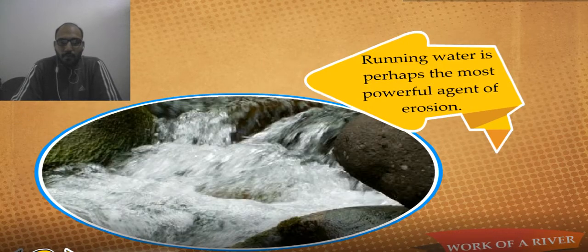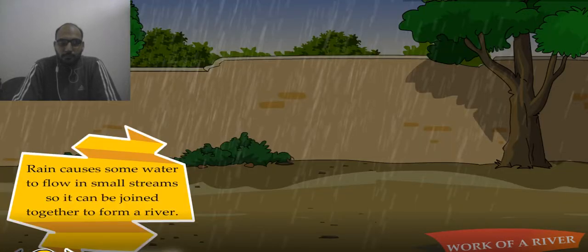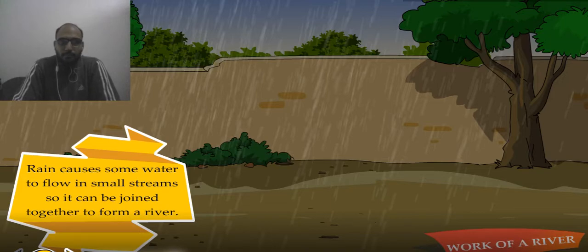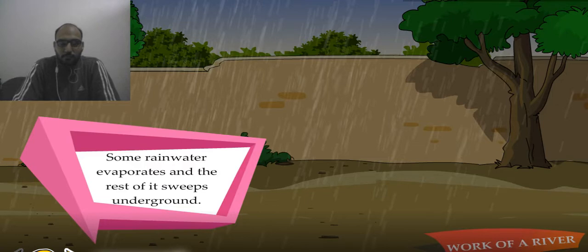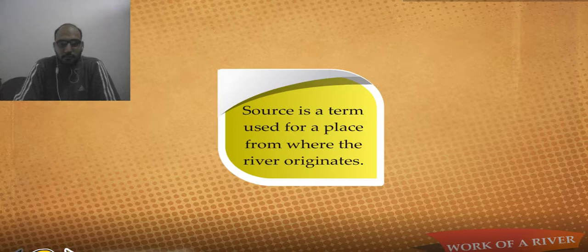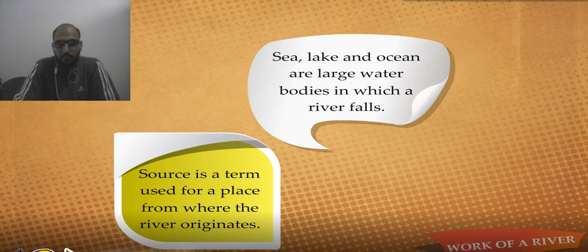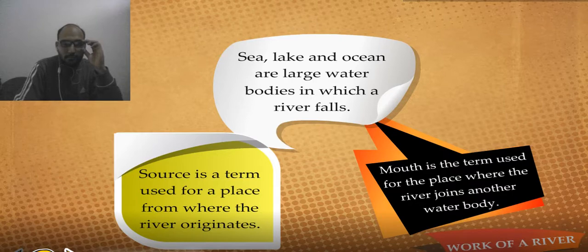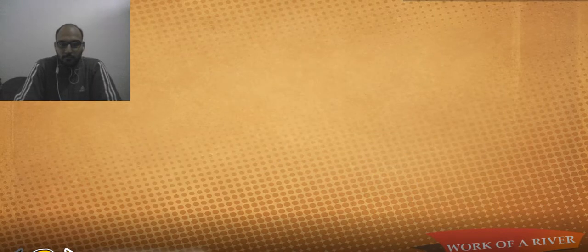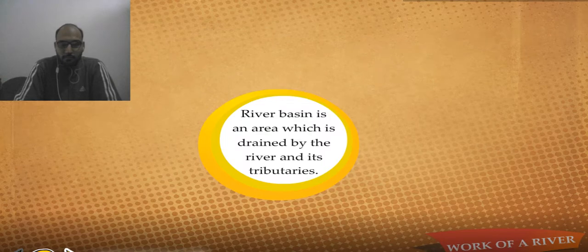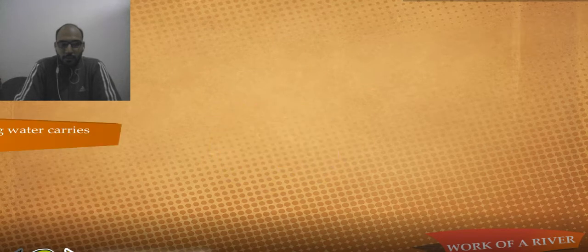Work of a river: running water is perhaps the most powerful agent of erosion. Rain causes some water to flow in small streams, which can join together to form a river. Some rainwater evaporates and the rest sweeps underground. Source is a term used for a place from where the river originates. Sea, lake, and ocean are large water bodies in which a river falls. Mouth is the term used for the place where the river joins another water body. River basin is an area drained by the river and its tributaries.